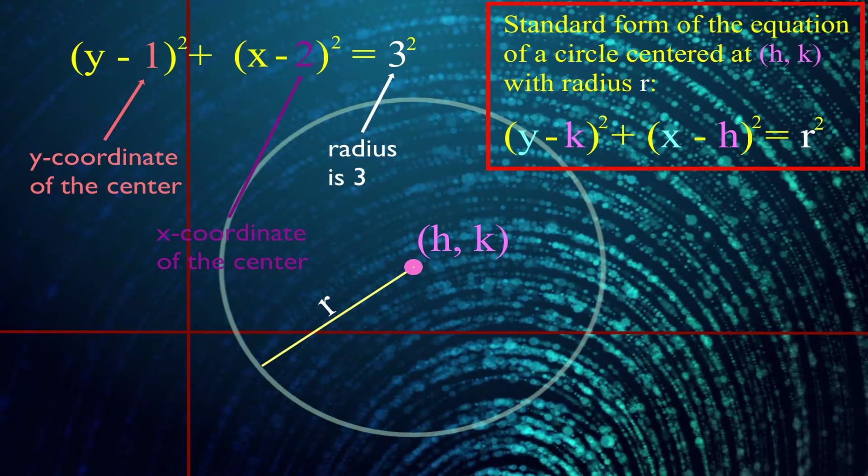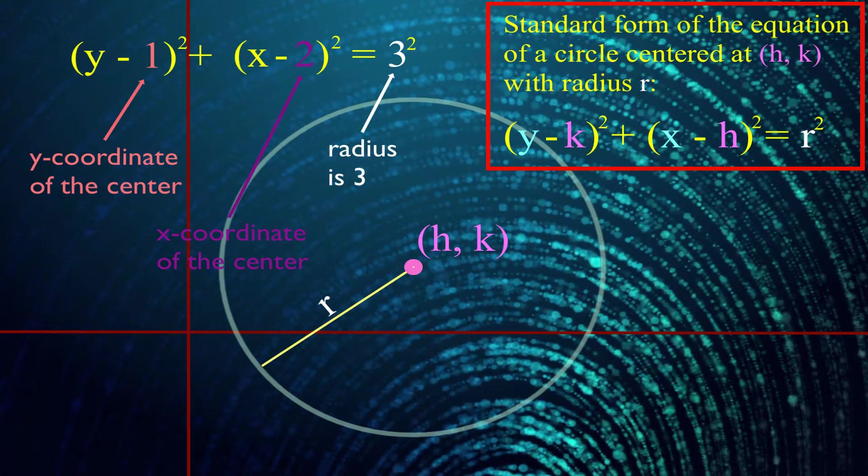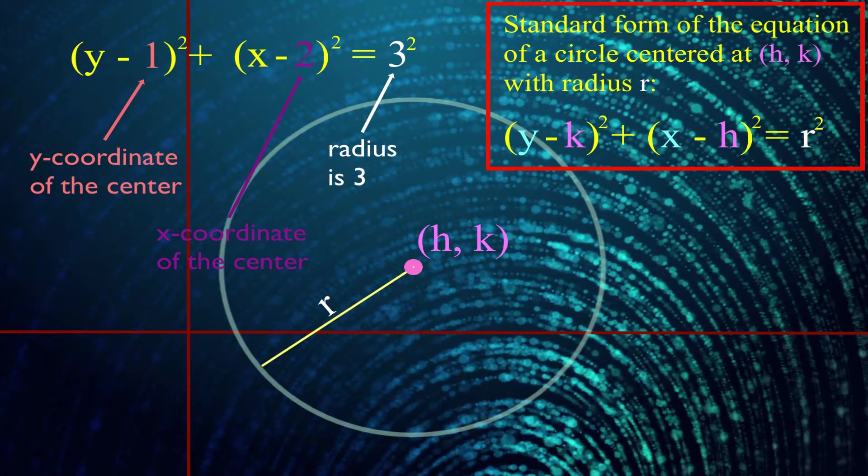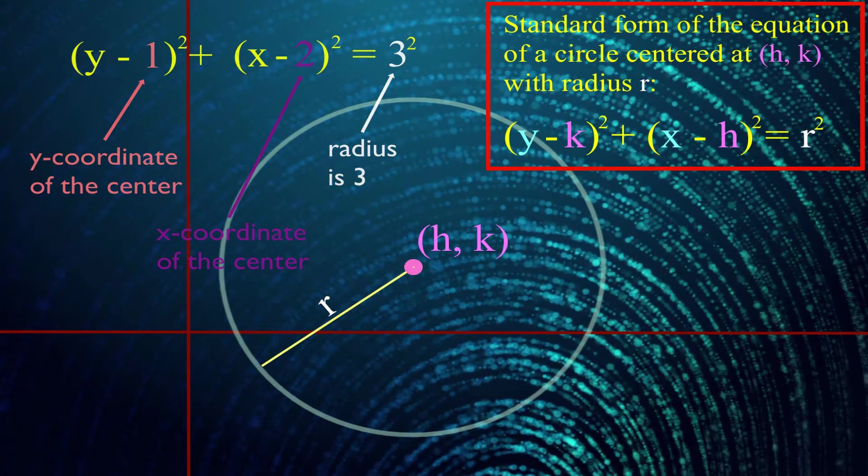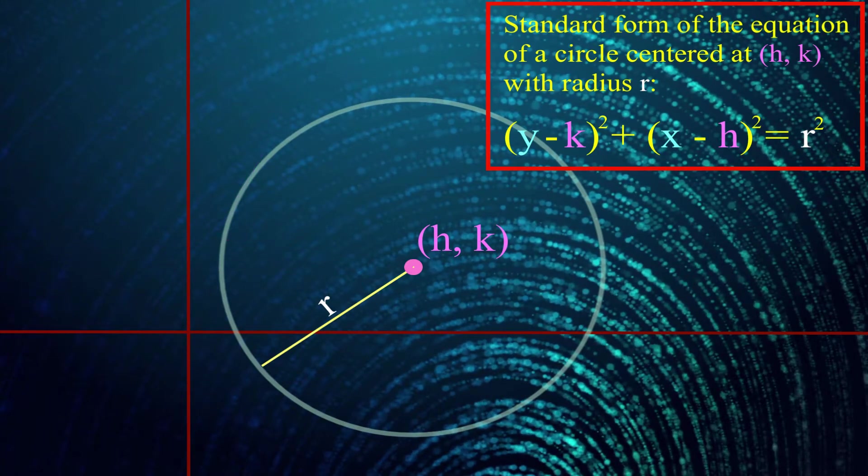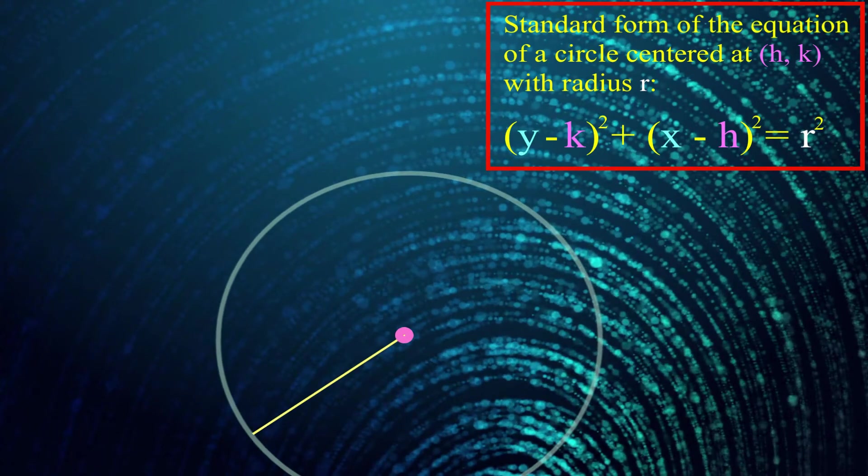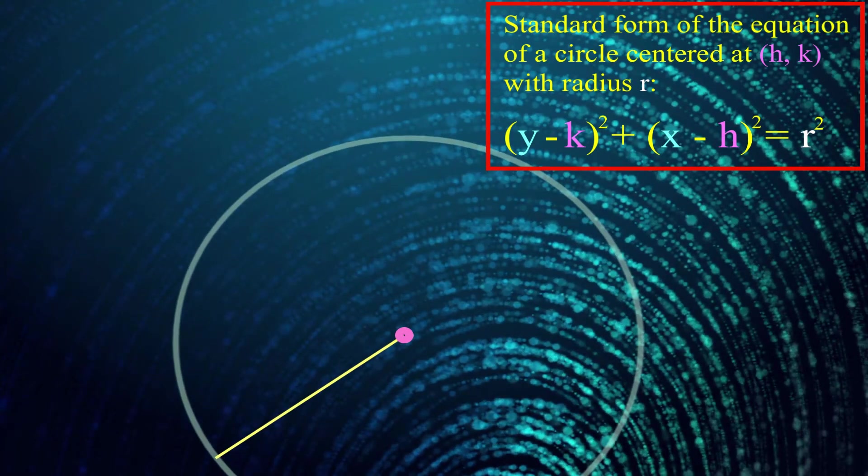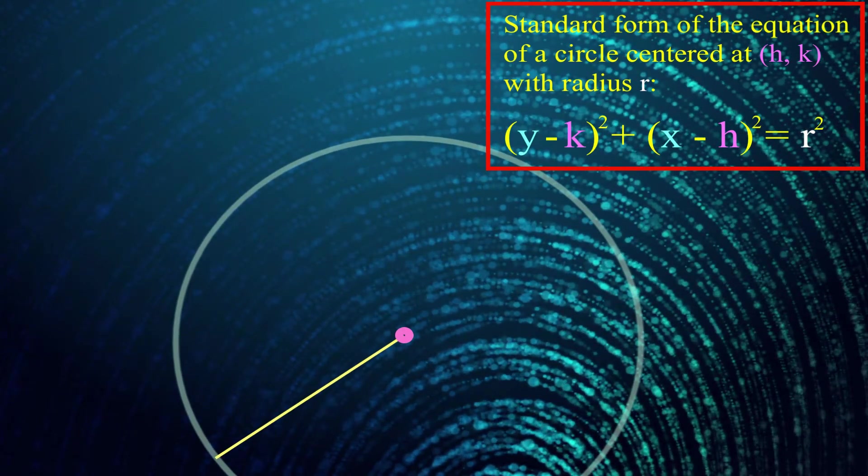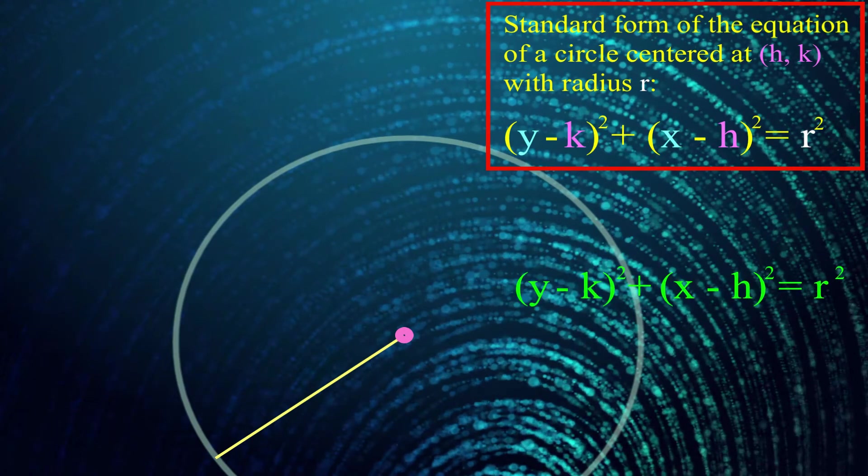So finally, after all that preamble, I can give you an example which, if you can solve, which I bet you can, you'll have learned everything I want you to learn for this section. I want to be able to draw you an arbitrary circle. Arbitrary meaning I can put the center wherever I want with whatever radius I choose. And what I want you to be able to do is tell me the equation of that circle. Easy enough?